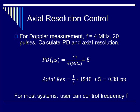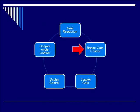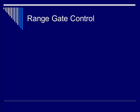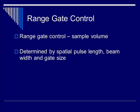Now, for most systems you really can't control the number of pulses, but you can control the frequency. Therefore, in terms of knobology, you just adjust the frequency during Doppler mode to improve the axial resolution. Now let's move on to range gate control. In a pulse Doppler system, you have the advantage of specifying the sample volume of interest where you want to receive the Doppler signal. Specifically, this sample volume is determined by the spatial pulse length, the beam width, as well as gate size.